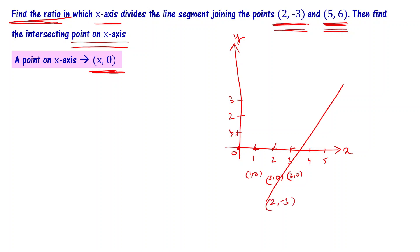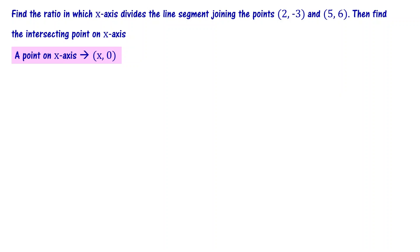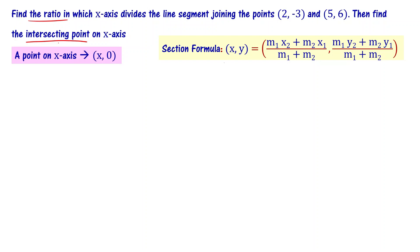The line connects 2 comma minus 3 and 5 comma 6. We are asked to find in what ratio this intersection point divides the line segment, and what are the coordinates of that point. Since the section point lies on the x-axis, it is x comma 0. We will use the section formula: x comma y equals M1 x2 plus M2 x1 divided by M1 plus M2, and M1 y2 plus M2 y1 divided by M1 plus M2.